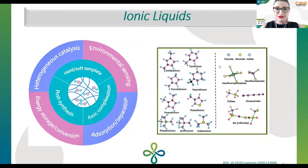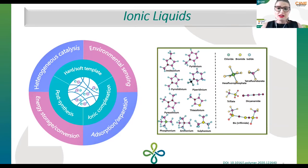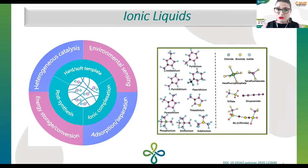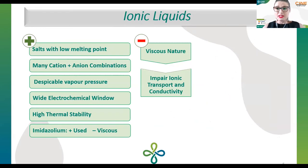Here on the left, I'm showing you different types of cations and anions that are used as electrolytes. We are focused on the imidazolium salt as the cation, and for the anion we are using bromide. But we have a lot of types of cations and anions that we could use as electrolytes to achieve desired properties.